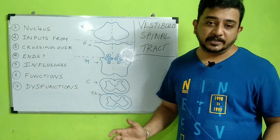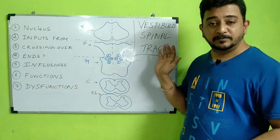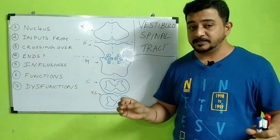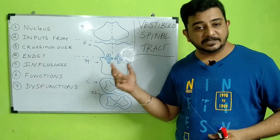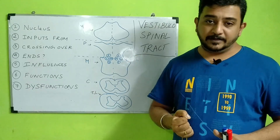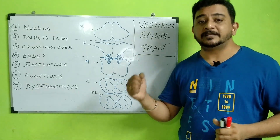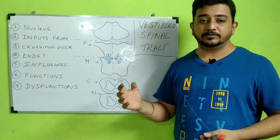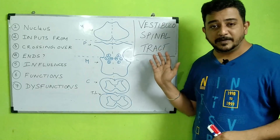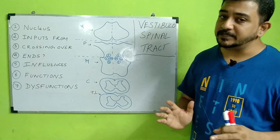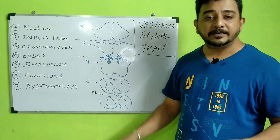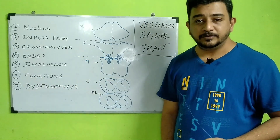Hello viewers, in today's video we are going to see about the vestibulospinal tract. As I told you already, there are five very important tracts in the extrapyramidal system: the rubrospinal, the vestibulospinal, the olivospinal, the tectospinal, and the reticulospinal. The tectospinal is most often not discussed much, so we are going to see the remaining four tracts in consecutive videos. Today's vestibulospinal tract is a very important tract because it is concerned with balance. As usual, we have seven points to describe in this tract.